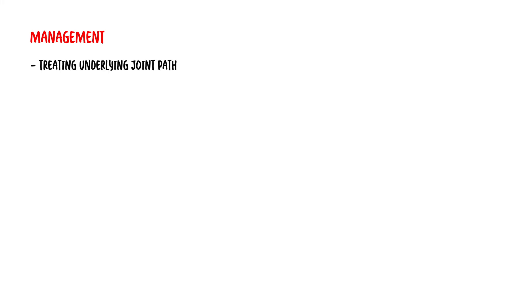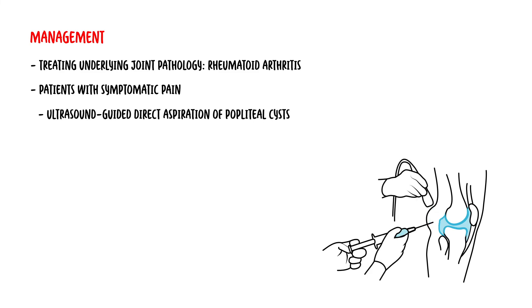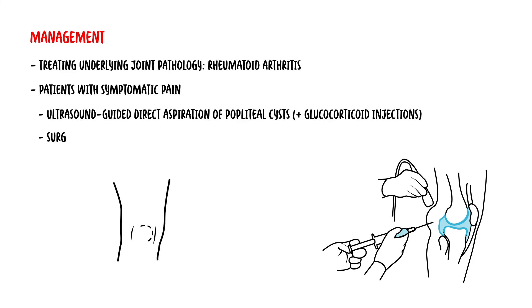Management of Baker's cysts: if symptomatic, treat the underlying joint pathology, such as osteoarthritis, rheumatoid arthritis, or the meniscal tear. With adult patients who have symptoms, ultrasound-guided direct aspiration of the popliteal cyst can be used, followed by injection of glucocorticoids to help reduce pain and inflammation. Finally, surgical excision of the Baker's cysts could also be done.